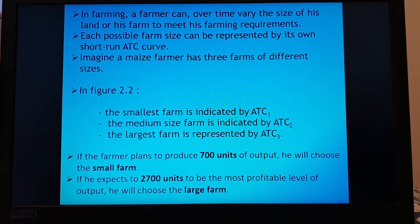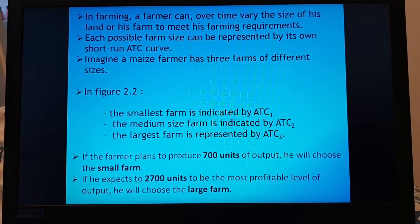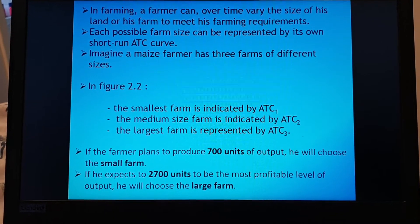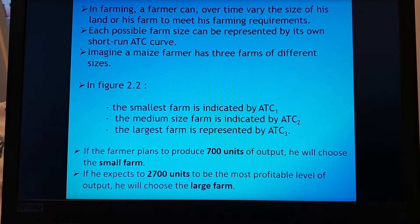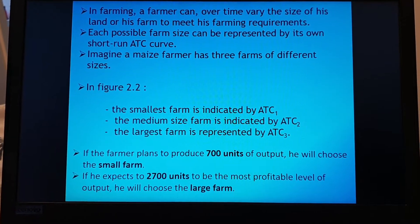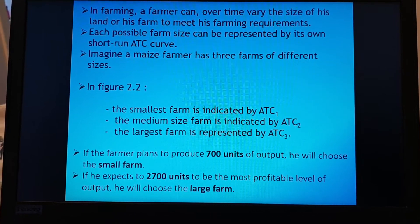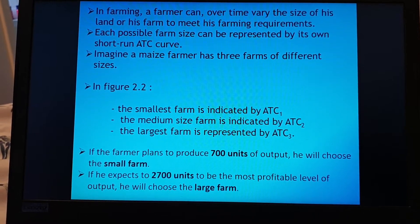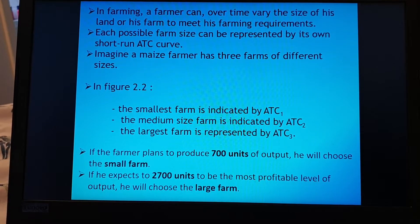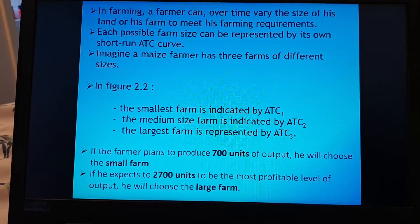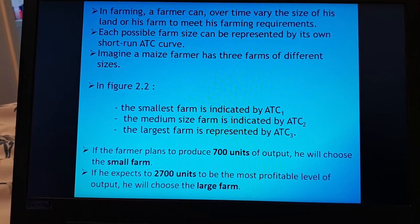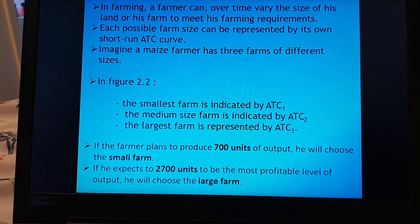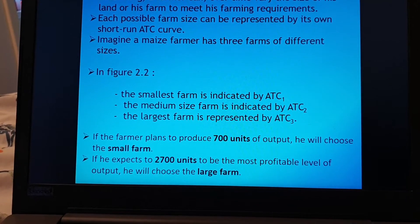So they say in farming a farmer can over time vary the size of his land or his farm to meet the farming requirements. Each possible farm size can be represented by its own short run ATC curve. Imagine, yeah they use a maize farmer, same thing, has three farms of different sizes. In figure 2.2 the smallest farm is indicated by ATC one, medium size ATC two and the largest farm ATC three.